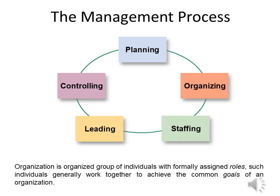We all know that the organization consists of a group of people who work together in order to achieve common goals. The management process consists of four main functions: planning, organizing, leading, and controlling. We also add here the staffing function.